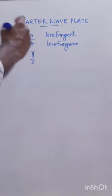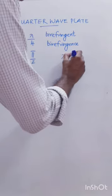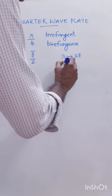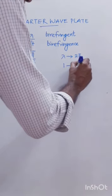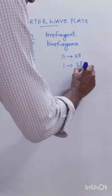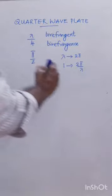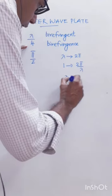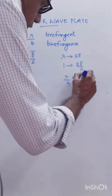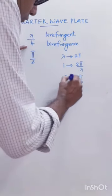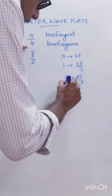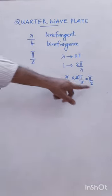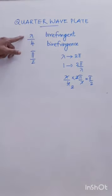How do we get that? A path difference of lambda corresponds to a phase difference of 2 pi, so a unit path difference corresponds to a phase difference of 2 pi/lambda. For a path difference of lambda/4, the corresponding phase difference is (lambda/4) × (2 pi/lambda) = pi/2. This is how we obtain a phase difference of pi/2 for a path difference of lambda/4.